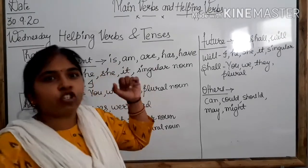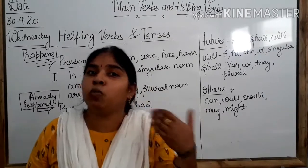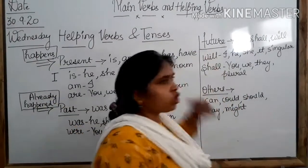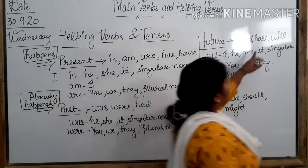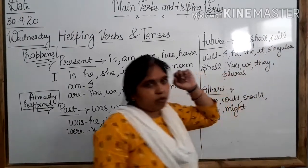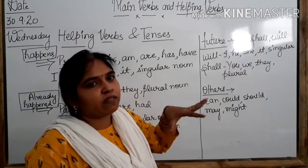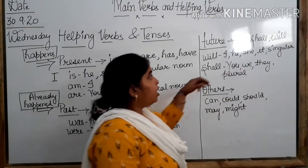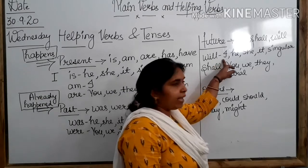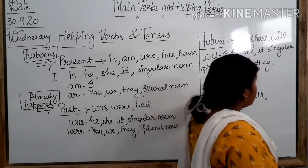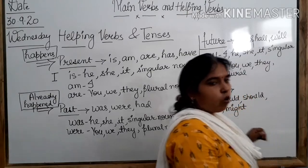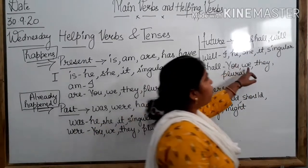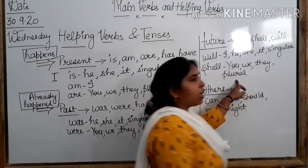Now, future tense — the things which will happen tomorrow. Whatever we are planning about tomorrow, that will come under future tense. We will use 'shall' and 'will' here. 'Will' we use with I, he, she, it, and singular noun. And 'shall' with you, we, they, and plural noun.